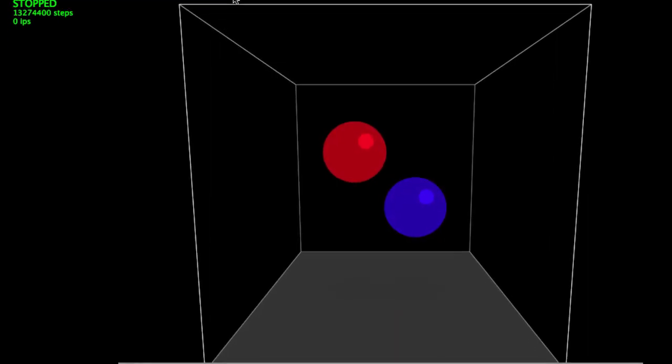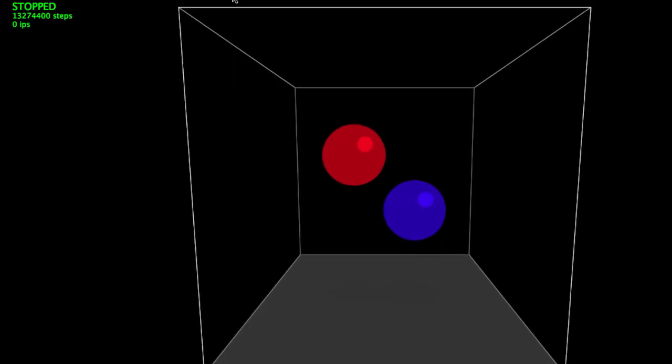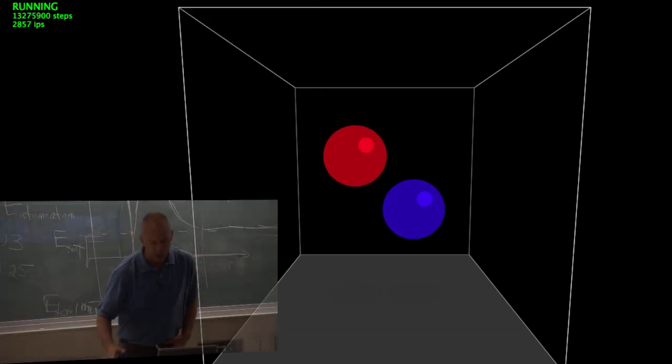So, I'm going to show you what a couple of atoms look like if they're just bouncing back and forth with that kind of energy or with some energy, with this kind of potential. And then I'm going to ask you some questions about it.